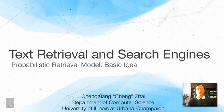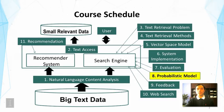This lecture is about the probabilistic retrieval model. We're going to continue the discussion of text retrieval methods and look at another kind of very different way to design ranking functions than the vector space model that we discussed before.